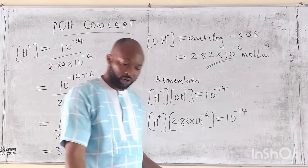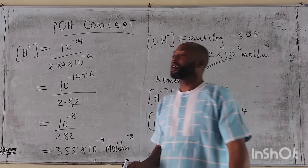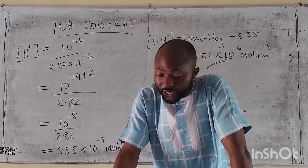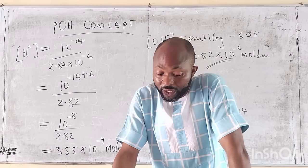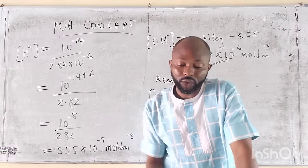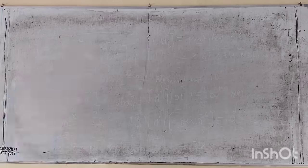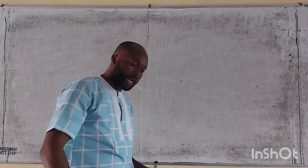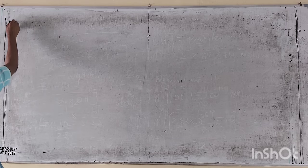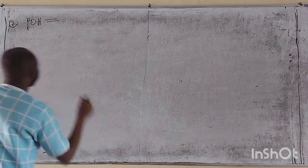Question number 2: a glass cup of orange juice is found to have a pOH of 11.40. Calculate the concentration of the hydrogen ions in the juice.